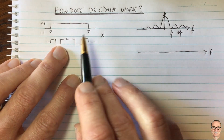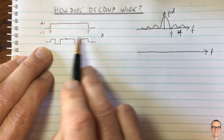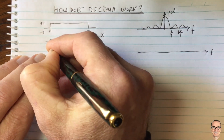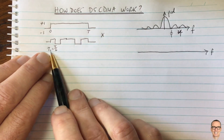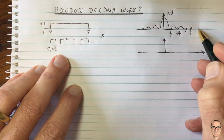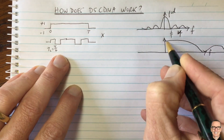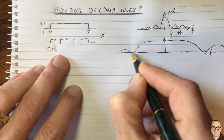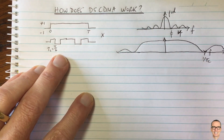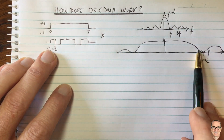Now let's look in the frequency domain - what is the power spectral density of this sequence? In the example I've drawn, there are six elements, so this is now T divided by six. We call this TC, the chip period - T is the symbol period and TC is the chip period. We now have something occupying a bandwidth which is six times the original bandwidth. This means we've spread the spectrum, which is why CDMA is sometimes called spread spectrum. The price we pay is using more spectrum - 1/TC instead of 1/T.